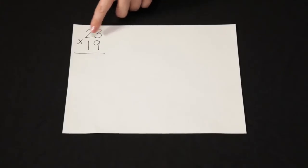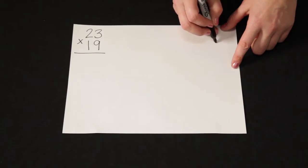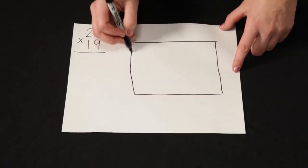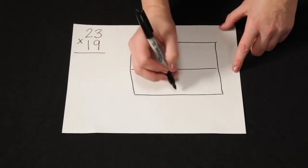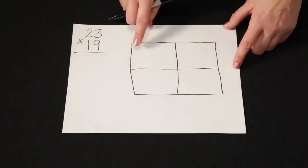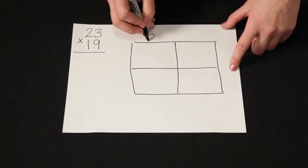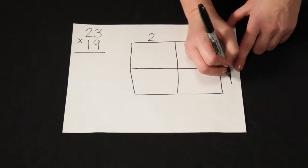If I have a two-digit number times a two-digit number, that means I'm going to need a box with two rows and two columns. I'll go ahead and draw my box fairly big because I'm going to do writing within these boxes. So now I have two columns and two rows and I can multiply 23 times 19.